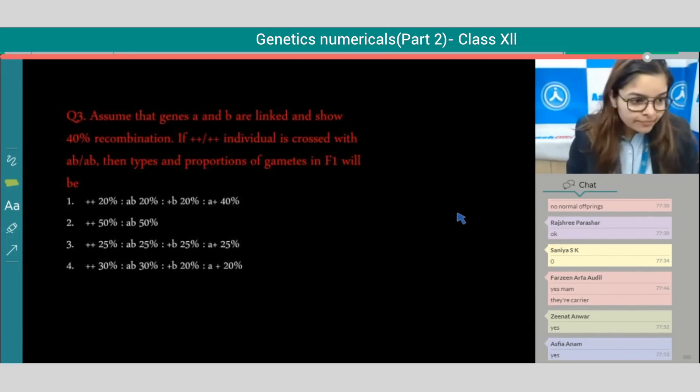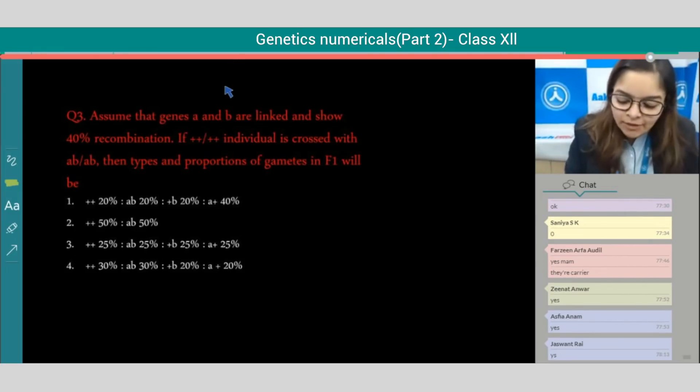Coming to the next question, this is from linkage. Assume that genes A and B are linked and show 40 percent recombination. If a plus plus individual is crossed with AB/AB, then the type and proportion of gametes in F1 will be - you can see the four options, tell me which one is correct.